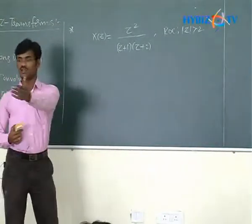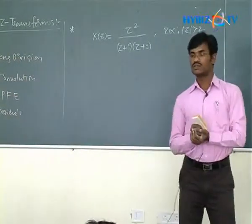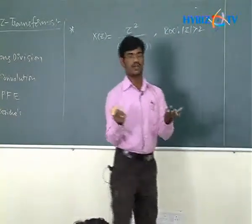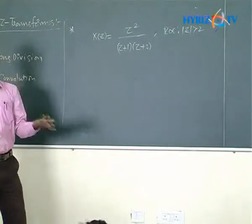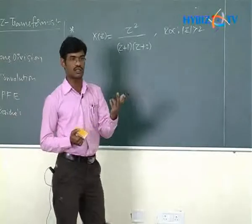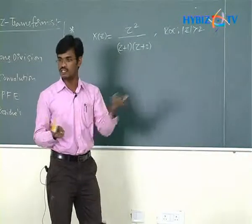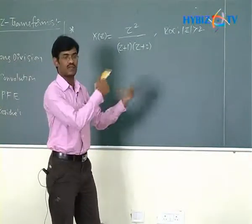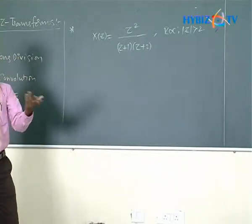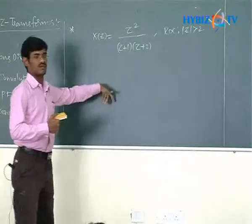The convolution property in Z transforms states that the convolution of x1(n) and x2(n) equals the product of their individual Z transforms. This is similar to Laplace and Fourier transforms. Conversely, the inverse Z transform of a product of individual Z transforms equals the convolution of the two discrete time sequences.